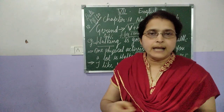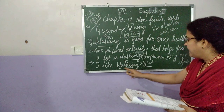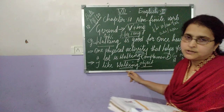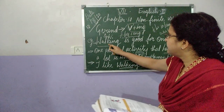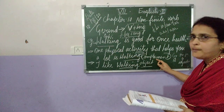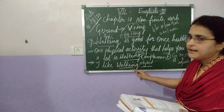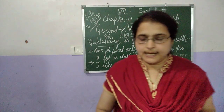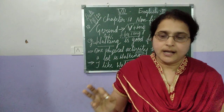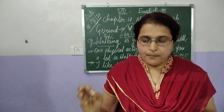Third sentence: 'I like walking.' The Gerund here in the third sentence acts as an object. So, the Gerund acts as a subject in the first sentence, as a complement in the second sentence, and as an object in the third sentence. Those are the uses of the Gerund.